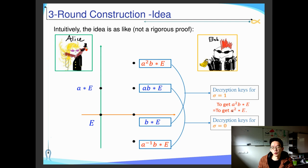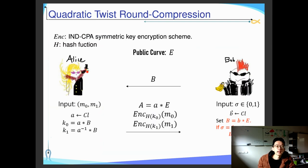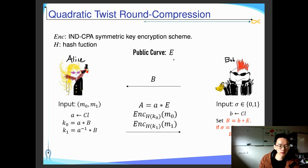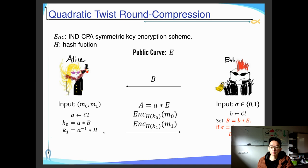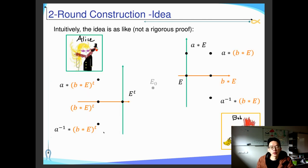The next step is that we use quadratic twists to compress the protocol from 3 rounds into 2 rounds. Bob computes [B]E or [B]E-twist and sends it to Alice, where E is the public curve. Alice then computes [AB]E or [A^{-1}B]E and uses these curves as decryption keys to encrypt the messages and send the ciphertexts to Bob. Bob can compute one decryption key but cannot compute the other decryption key unless he can solve a computational CSIDH problem.